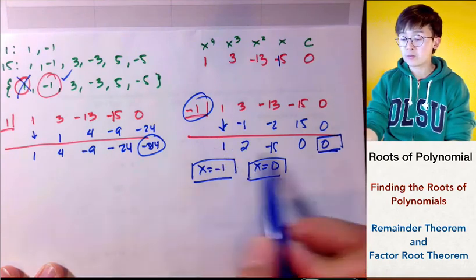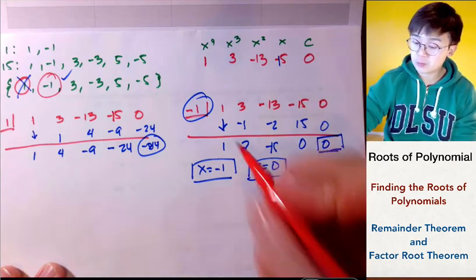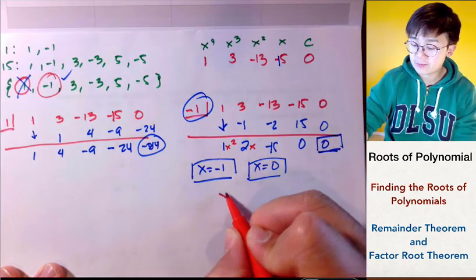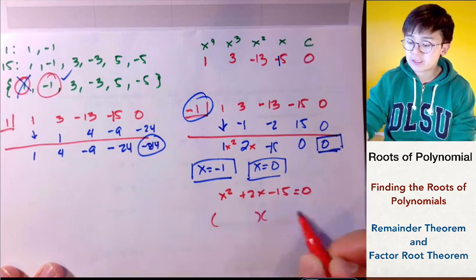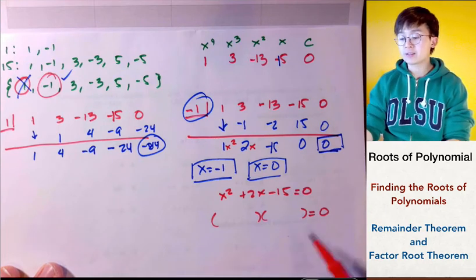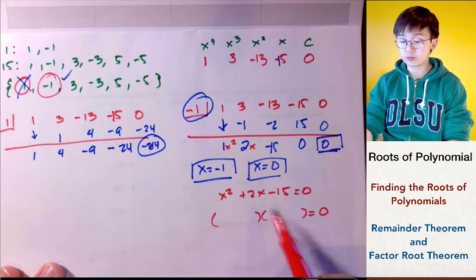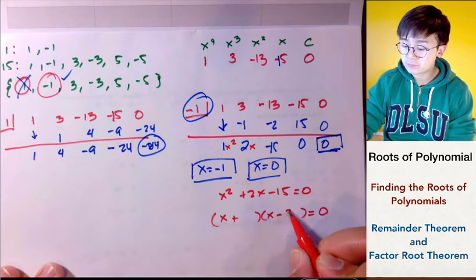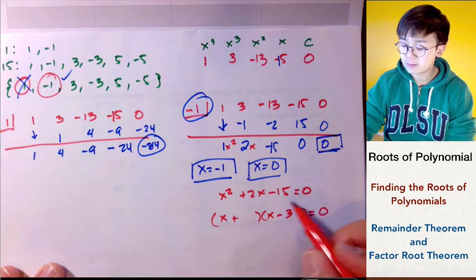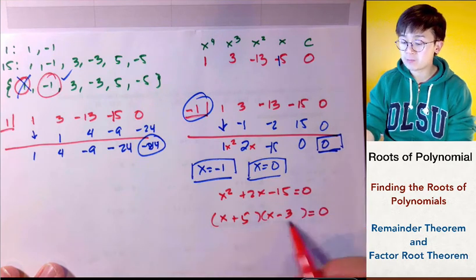The remaining two solutions come from solving the quadratic equation. The quotient becomes x squared plus 2x minus 15, which is factorable. The factors of negative 15 that add to 2 are positive 5 and negative 3, since 5 times negative 3 is negative 15 and 5 minus 3 is positive 2.